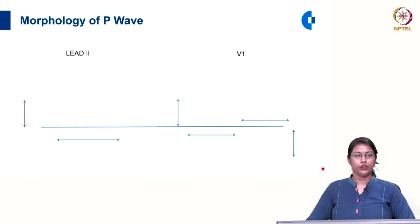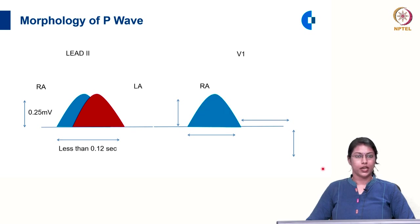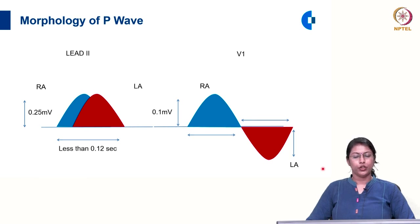Looking at the morphology of the P wave: in lead 2, the P wave has two components — the right atrial component and the left atrial component. The normal amplitude of the P wave in lead 2 is 0.25 millivolt and the duration is less than 0.12 second. In lead V1, the P wave has a biphasic shape, with a positive component contributed by the right atrium and a negative component contributed by the left atrium, each of amplitude 0.1 millivolt and duration 0.04 second.